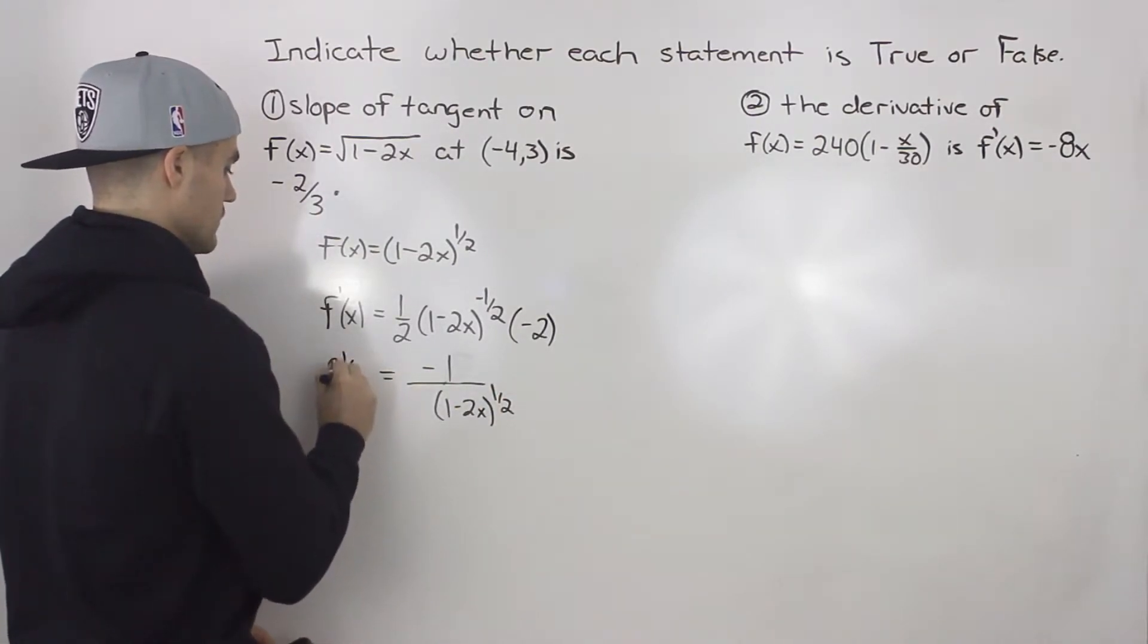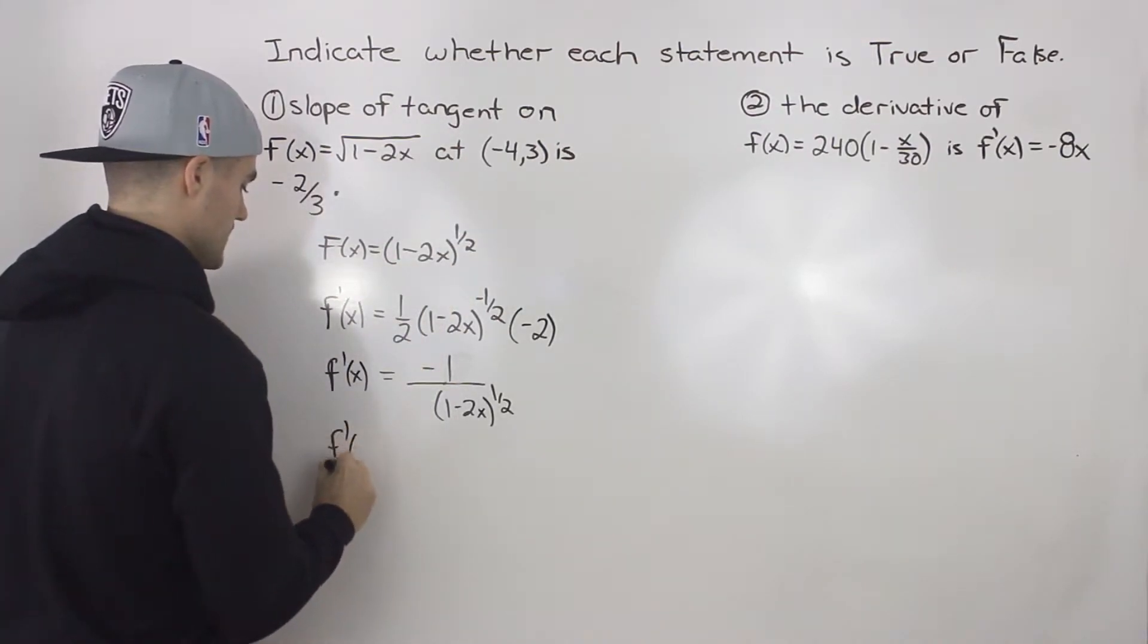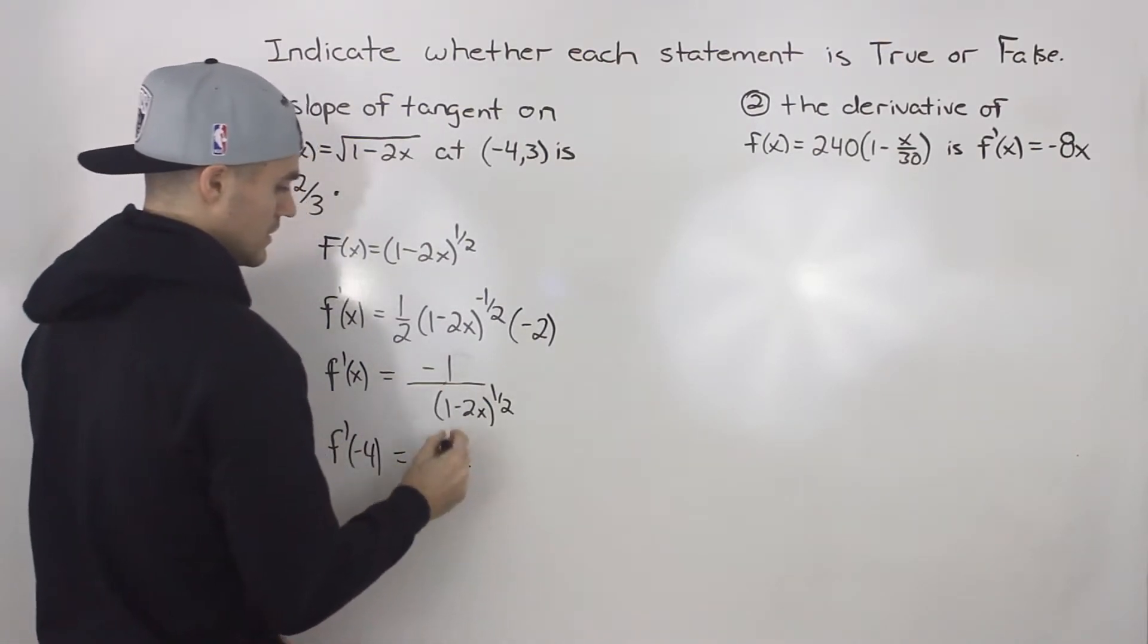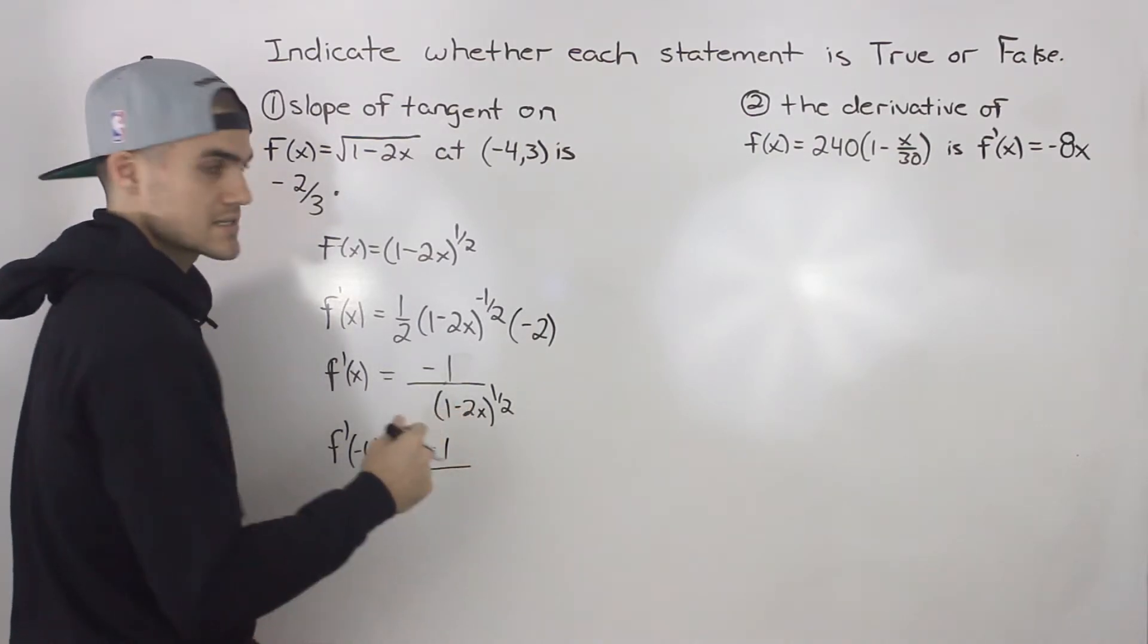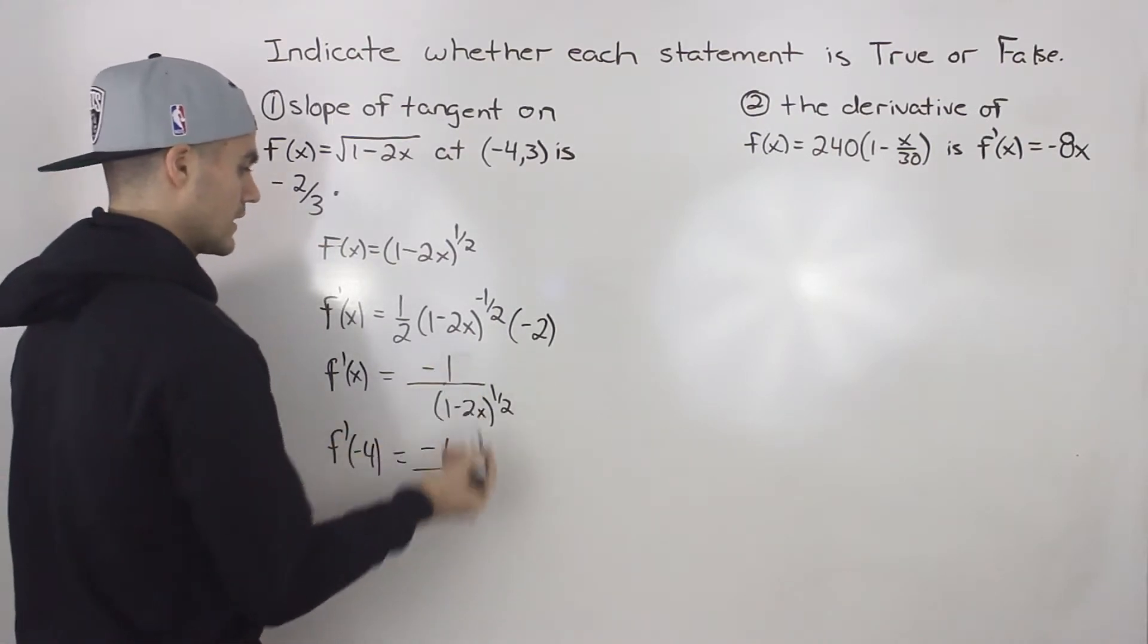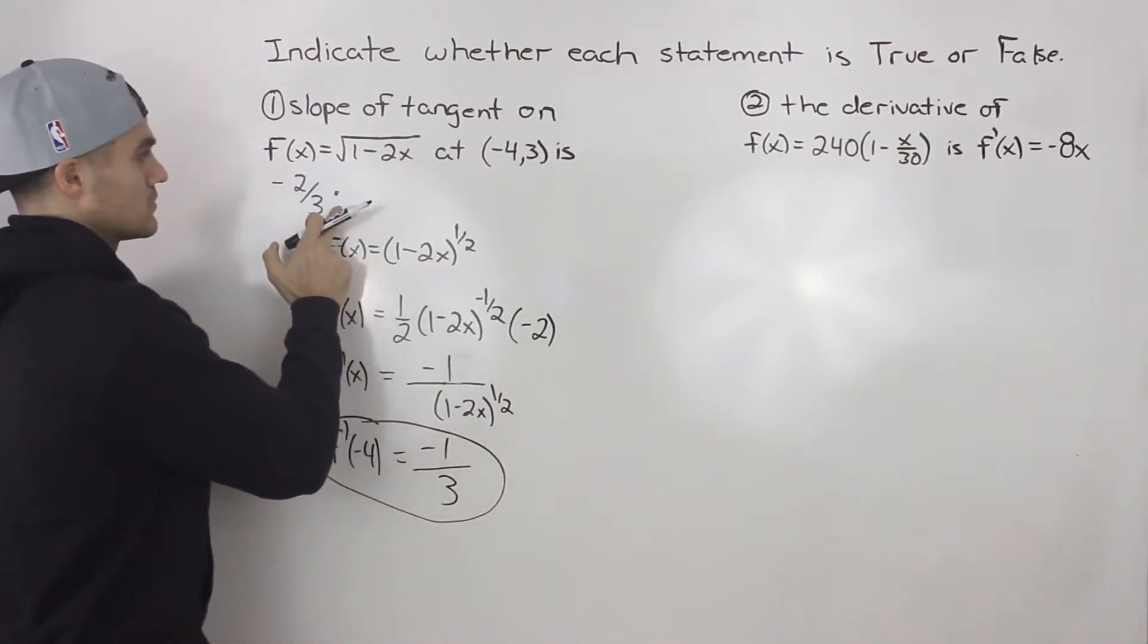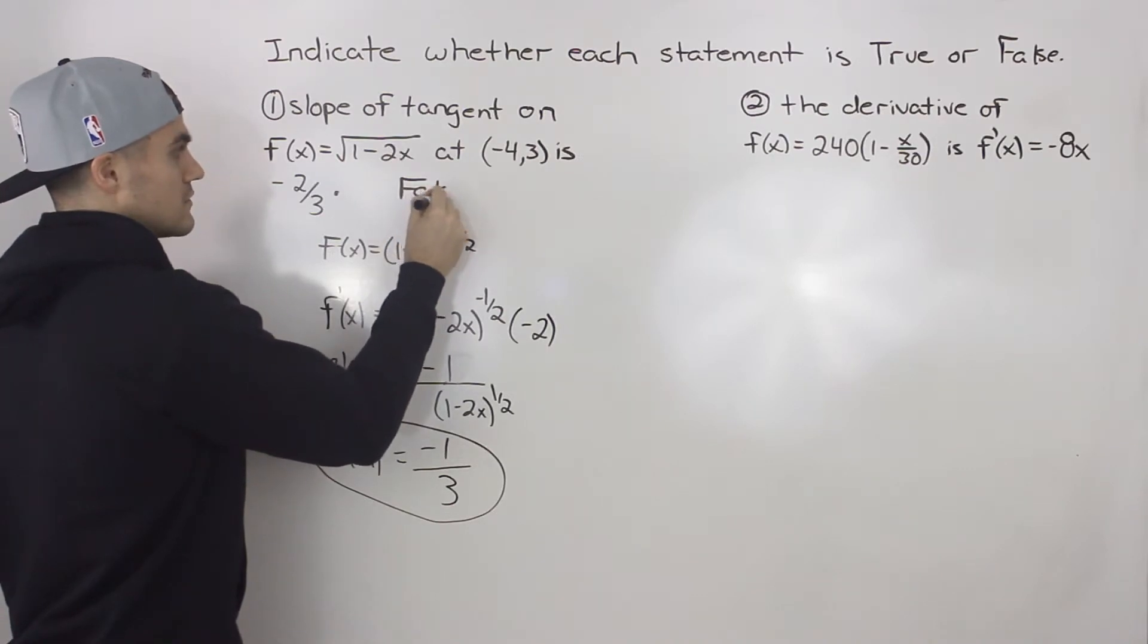Now this is the derivative. And now we can plug in this value of -4 into the derivative. When we do that, this would still stay as -1. Then we'd have 1 minus 2 times -4, which is the same as 1 plus 8. 1 plus 8 is 9. Square root of 9 is 3. So the answer is -1/3. And notice that that's not equal to -2/3. So this statement here is false.